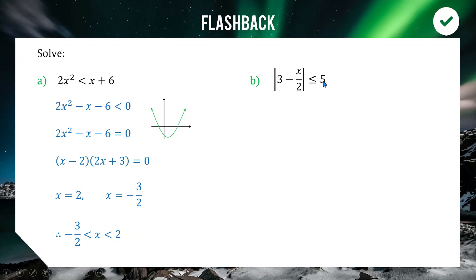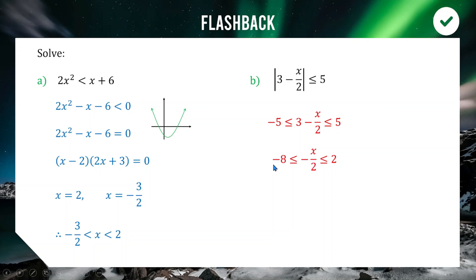For the absolute value inequality, |something| ≤ 5 means that something is between −5 and 5. We set what's inside the absolute value between −5 and 5, then subtract 3 from everywhere to get −8 and 2. Multiplying everything by −2 and reversing the inequality direction gives 16 > x > −4, or equivalently −4 ≤ x ≤ 16.